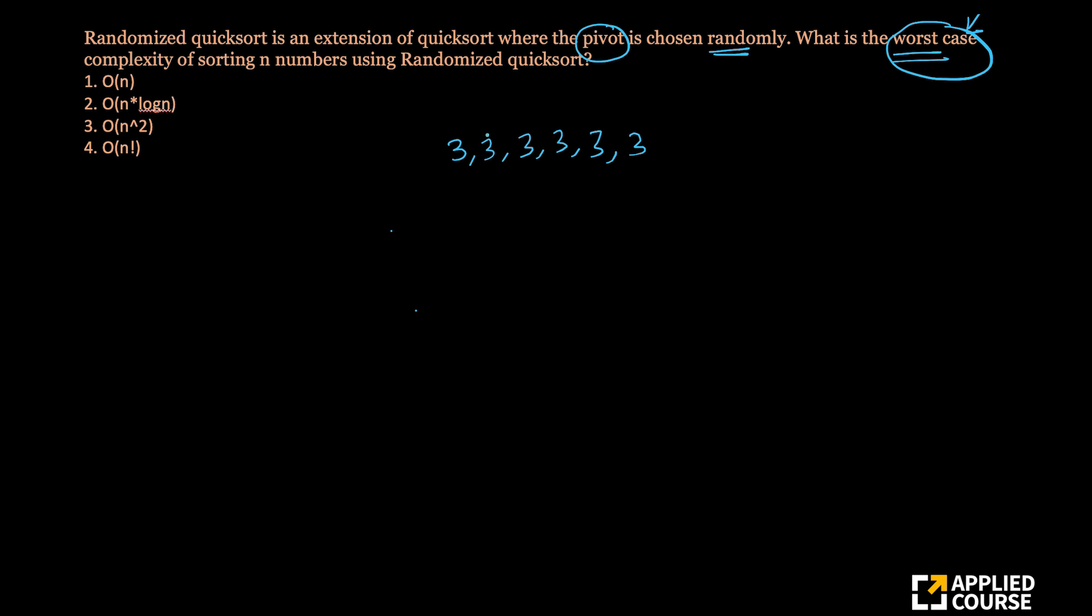It will pick one of these elements randomly. It can pick any of these elements, but all the elements are same. Let's assume it picked up this element. Now it will try to readjust the array such that all the elements less than or equal to are on one side and all the elements greater than or equal to are on the other side. So one of these two things will happen. You'll have three here and the rest of the threes are here. So this is your pivot element or based on how you write your code, you could have the pivot element come to the end and all the elements here.